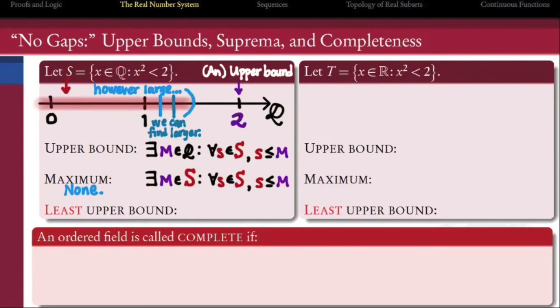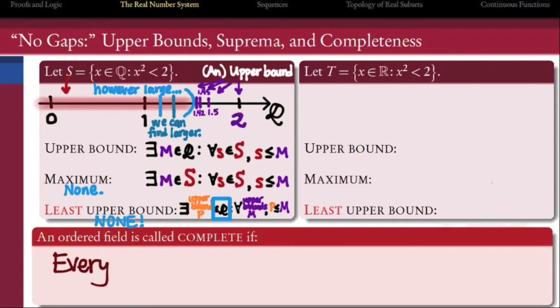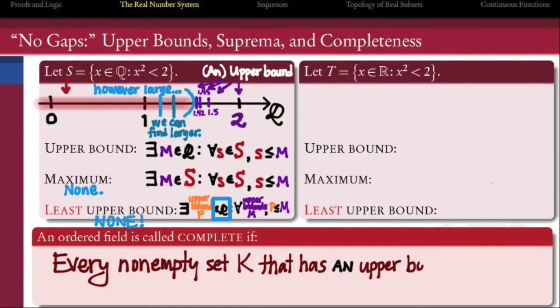What is the least upper bound, also known as the supremum of s? We can do better than 2 by finding smaller upper bounds, such as 1.5 or 1.45 or 1.42. But the smallest such upper bound would be the square root of 2. And even though all the elements of s are rational, that upper bound, that supremum, is not.